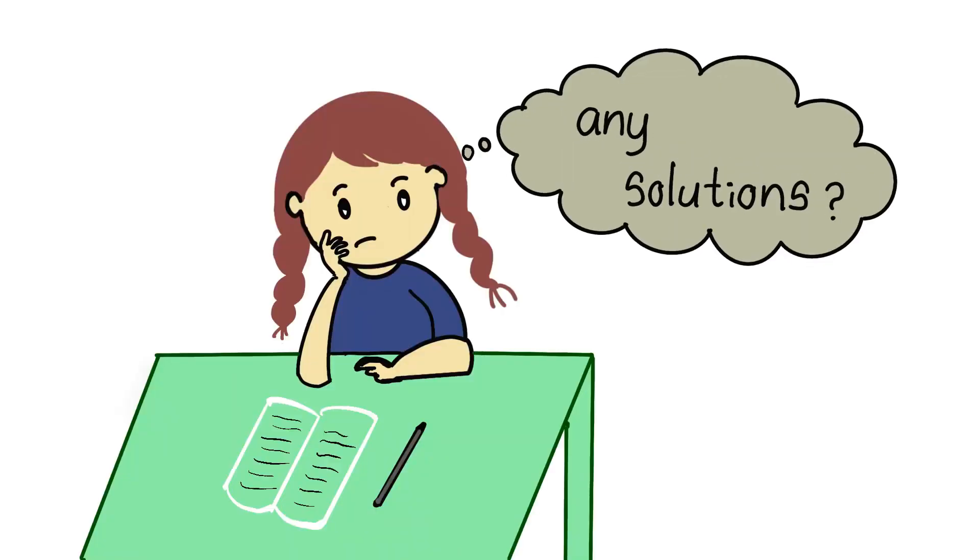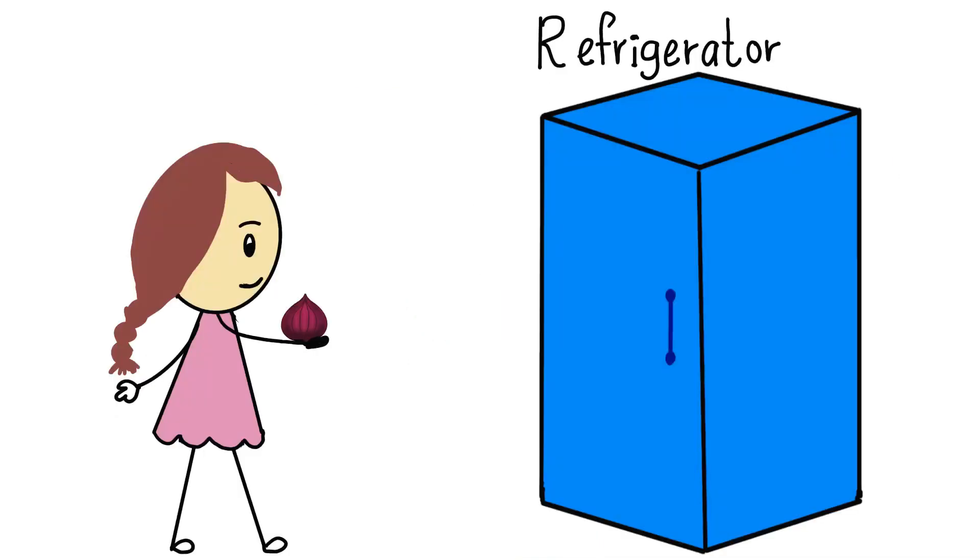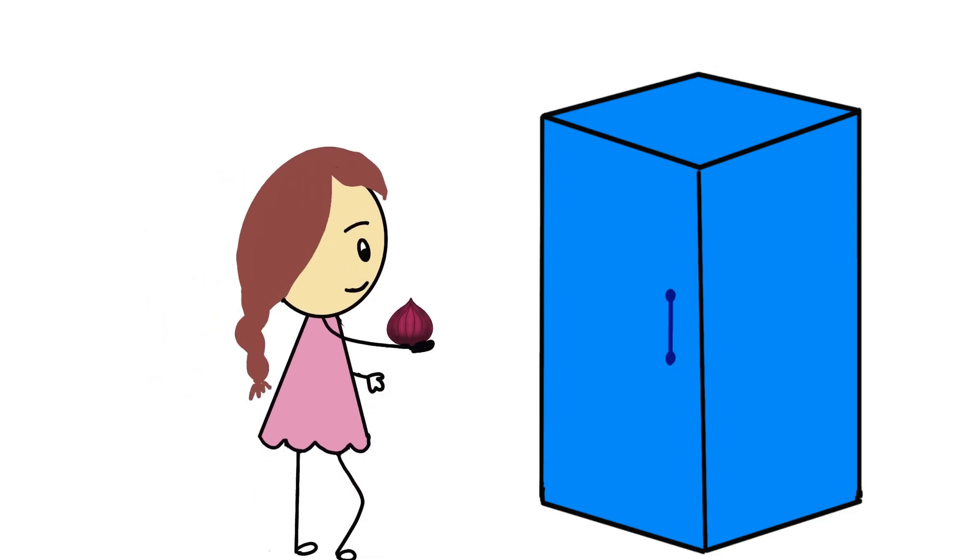Is there any solution to prevent crying when cutting onions? Yes, there are three ways. The first way is to keep the onions in the fridge for 10 to 15 minutes before cutting.